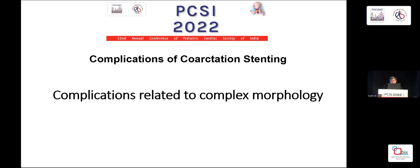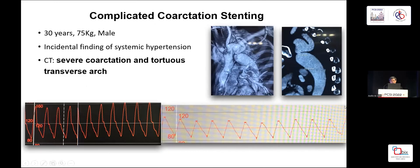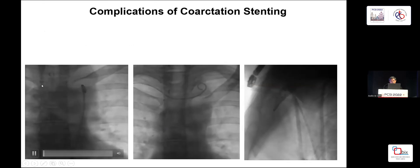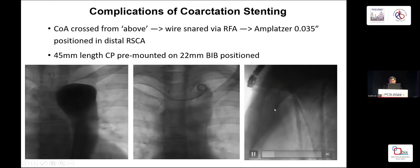Let me start with the complication related to complex morphology. This patient is a 30-year-old male, body weight 75 kg, presenting with systemic hypertension. On CT, you can see severe coarctation with a tortuous aortic arch. On angiography, the pressure gradient was 45, and we could not see any connection between the descending aorta and the transverse arch — we had to cross from the subclavian approach, and you can see it is very tortuous and severe.